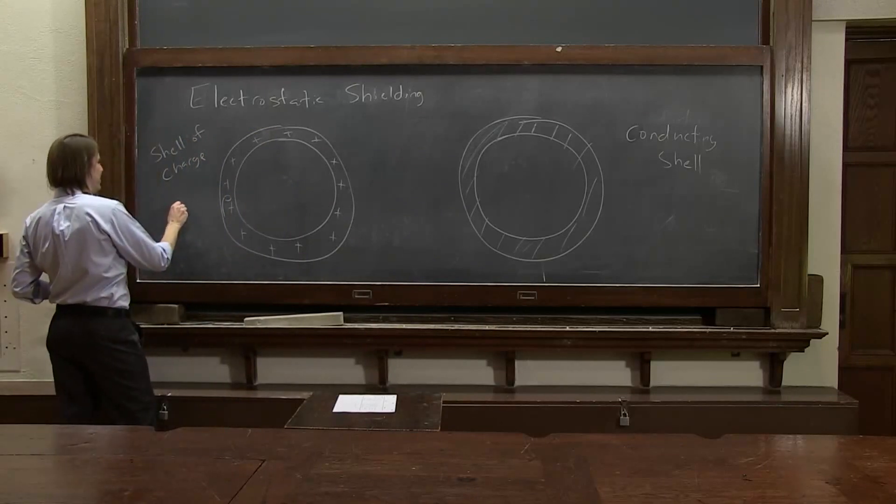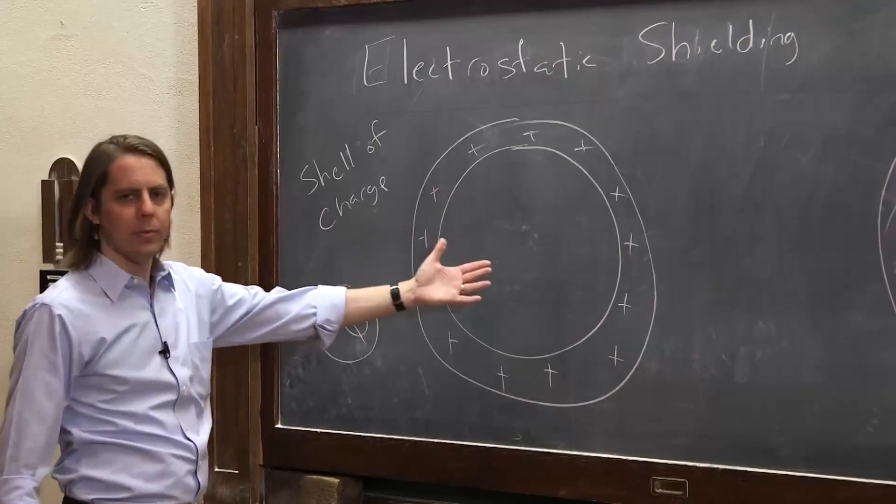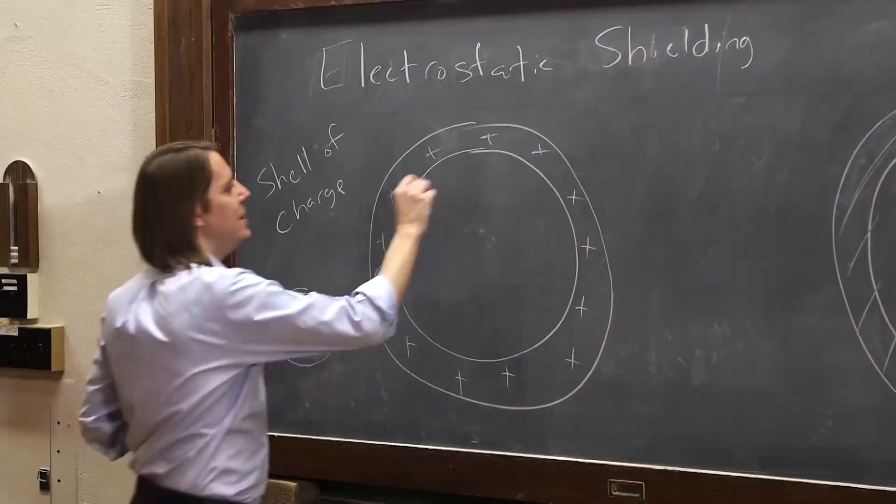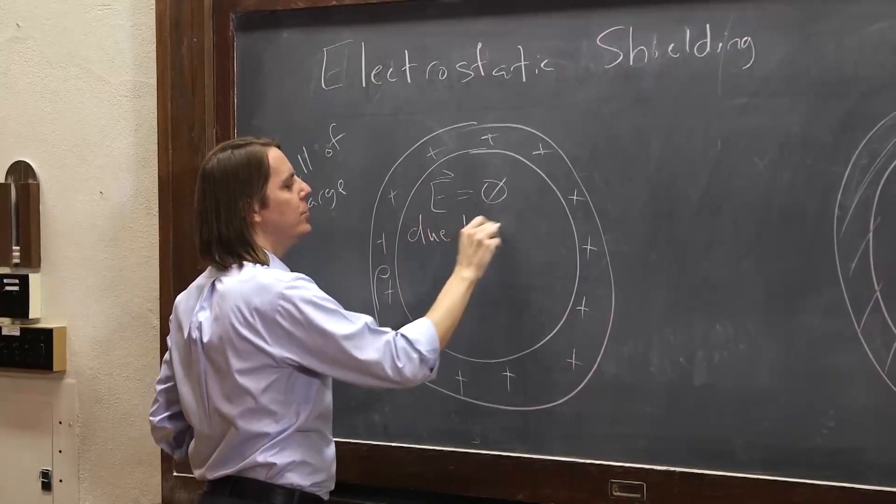So let's imagine then that we have some big whopping charge here, plus Q. What will the field be inside? Well, E, the electric field, will be zero due to the shell.